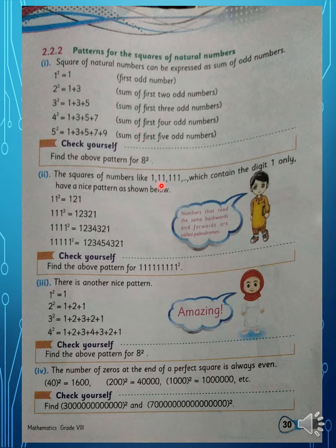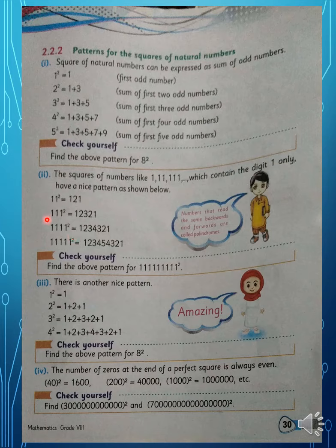The square of numbers like 1, 11, 111 — which contain only the digit 1 — have a nice pattern. 1 squared = 1. 11 squared = 121. 111 squared gives 1, 2, 3, 2, 1. For 1111 squared, which has four 1s, the pattern goes up to 4: 1, 2, 3, 4, 3, 2, 1. You can verify this by rough work.